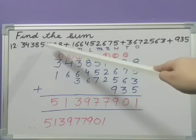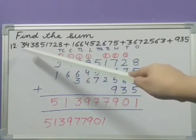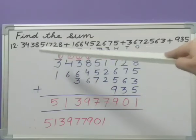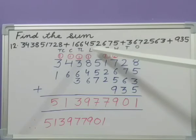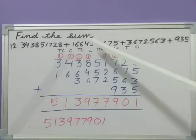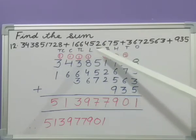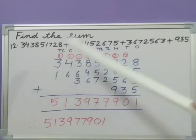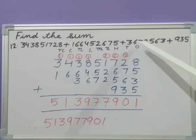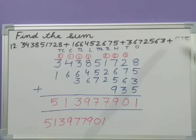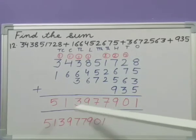So number is 16 crores, 64 lakhs, 52,675. So just below it we can start it from 10 crores. Now the next number is 10 lakhs, 36 lakhs, 72,563. So we will start this from 10 lakhs here. Next number ones, tens, hundreds, that means 935. So we will start from hundreds place and then we are going to add them.